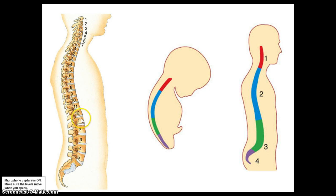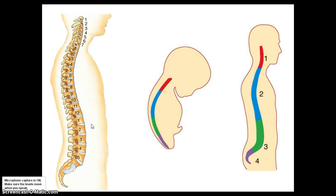Inferior to the thoracic region are the lumbar vertebrae — five of them, named L1 through L5. About the time kids start to crawl and walk, around 6 to 9 months, this curvature changes to allow us to stand upright. The lumbar vertebrae are the largest and heaviest; they're under the most strain because they carry all the upper body's weight. This is where most people have back problems, including herniated or slipped discs, especially in people who are overweight.